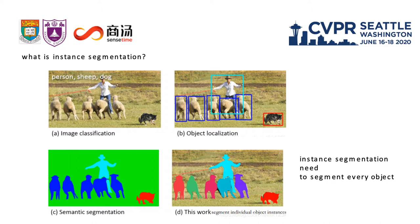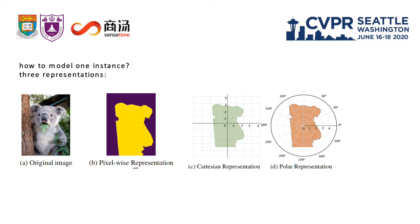First, let's simply review the definition of instance segmentation. It needs to segment an individual object instance in one given image. It is much more complex than bounding box detection and semantic segmentation.